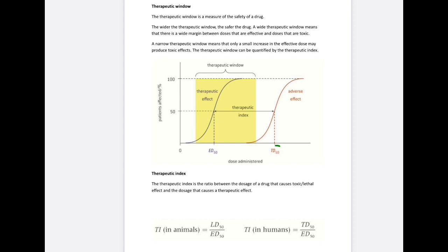When we are administering the drug, you can see here, ED means effective dose and TD means toxic dose. So how much is effective will be somewhere between the effective dose and the toxic dose.